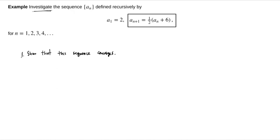Step one is to show that it converges, and number two is, if possible, try to find the limit. Remember, the monotone convergence theorem just tells us that our sequence converges — that it has a limit — but it doesn't necessarily tell us what the limit is. Sometimes it's easy to find the limit, and sometimes not. In this one, we will be able to find it, because it's defined recursively and we'll use that to our advantage.